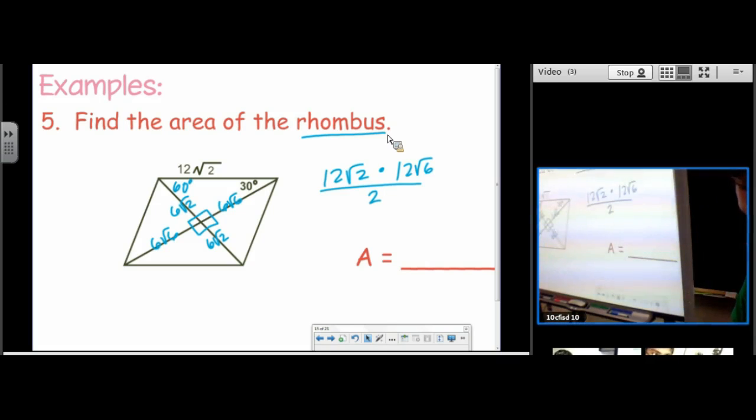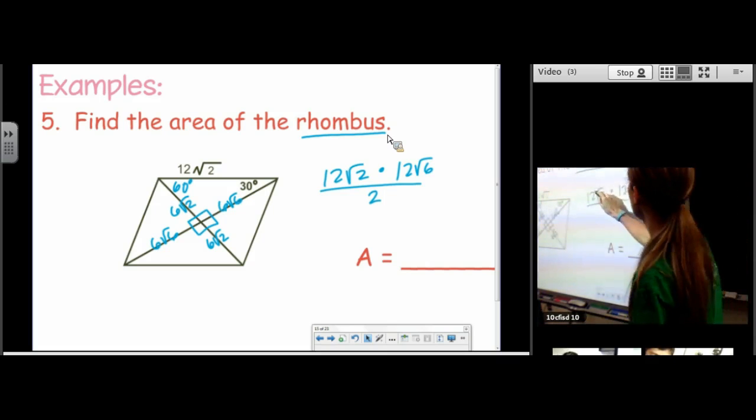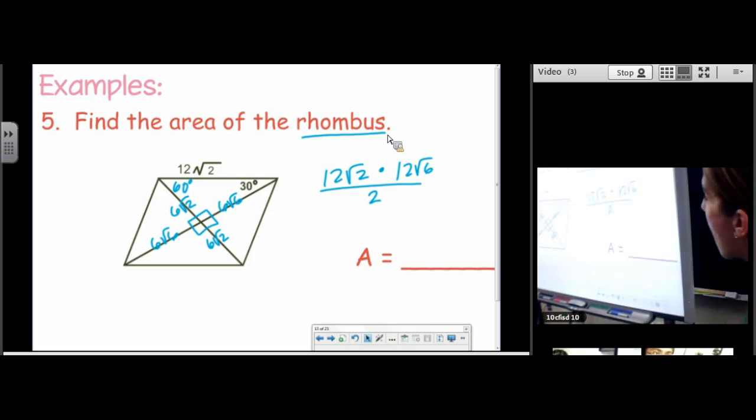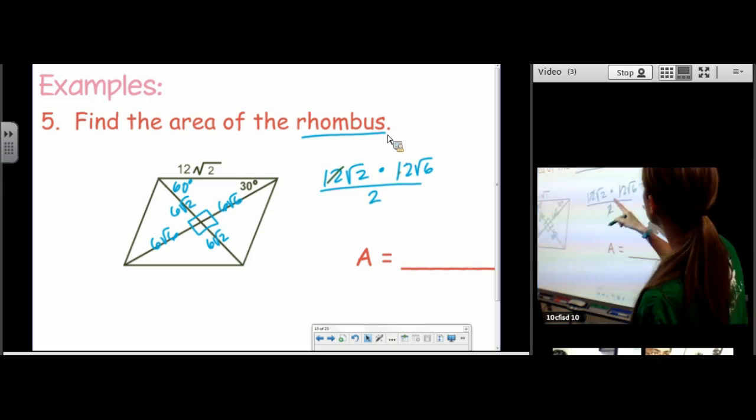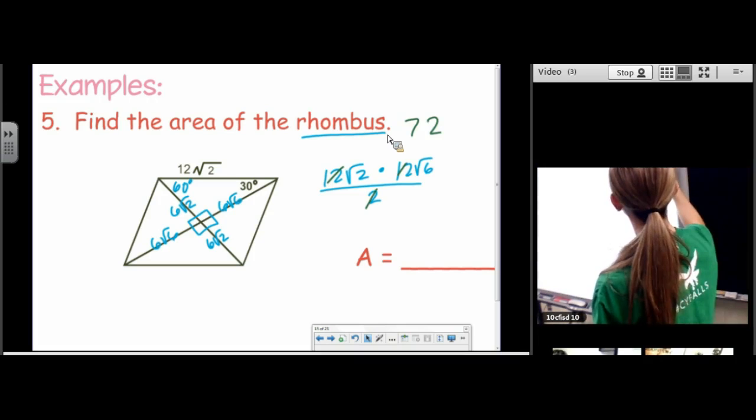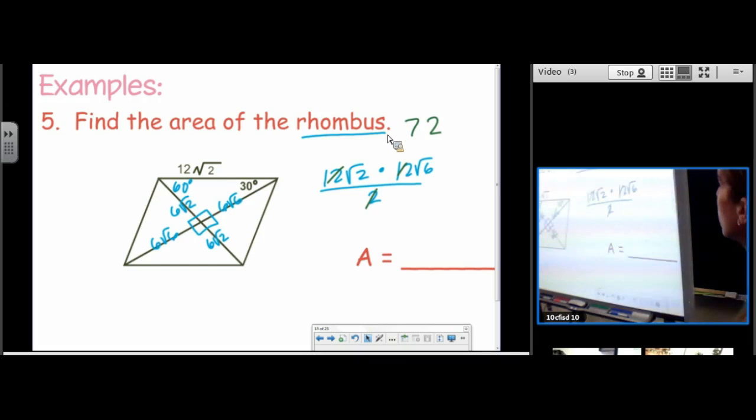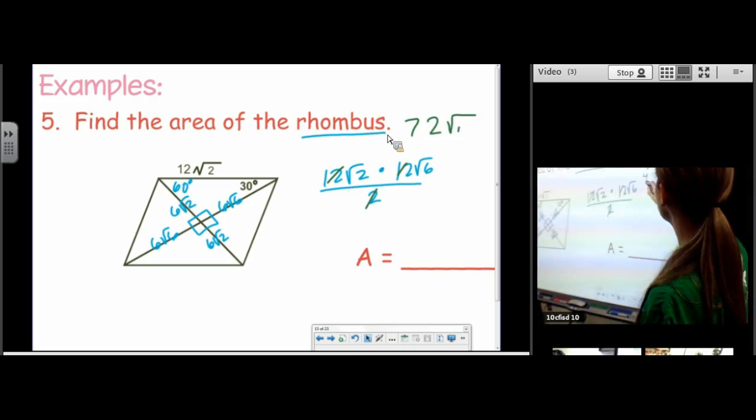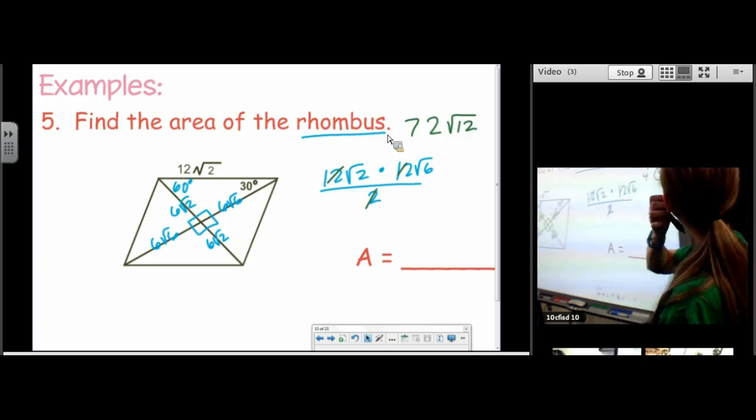So 144 divided by 2. So I used up those. I got 72. Now I'm going to multiply my radicals. Square root 2 times square root 6 is square root 12. And now I do need to reduce this. So a 2 escapes and a 3 is left over.